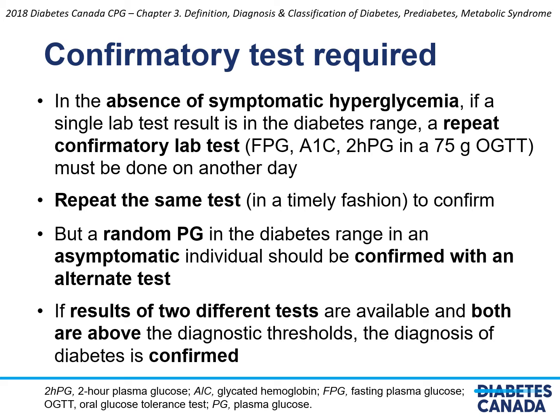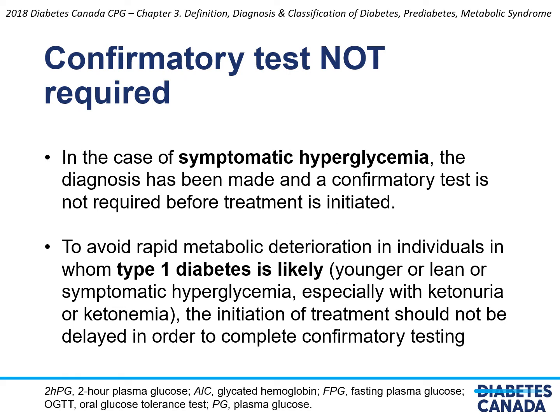If the results of two different tests are available at the same time and both are above the diagnostic thresholds for diabetes, then the diabetes diagnosis is confirmed and repeat testing is not necessary. There are situations where confirmatory testing is not required before making a diagnosis and starting treatment: first, in a symptomatic patient with hyperglycemia with things such as weight loss, polyuria, polydipsia; second, in a patient in whom you suspect type 1 diabetes and delaying treatment to make a confirmatory diagnosis would potentially lead to dangerous consequences.